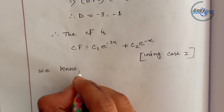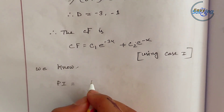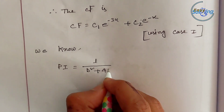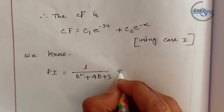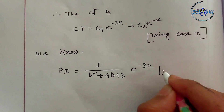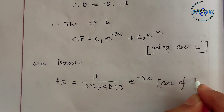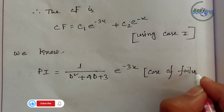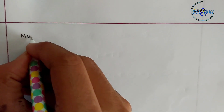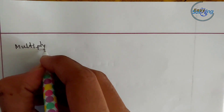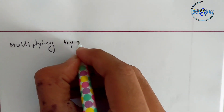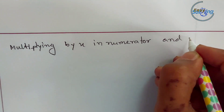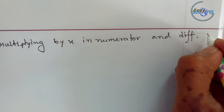Now we find the particular integral (PI). We write the PI using the operator method. We can see that when we substitute D equals minus 3, the denominator gives e to the power minus 3x, resulting in 1 by 0. This is a case of failure.